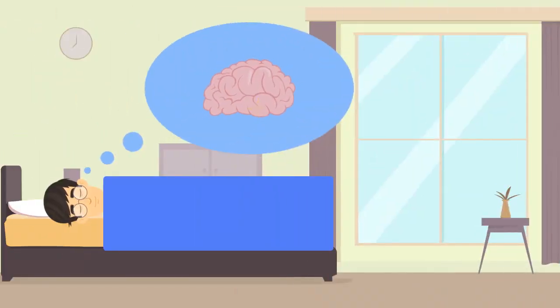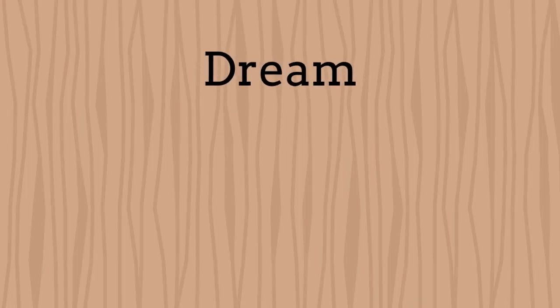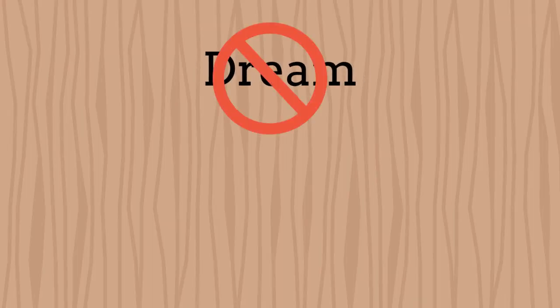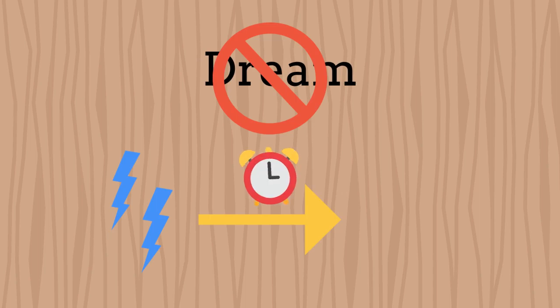These brain impulses, they suggested, are synthesized and analyzed to define meaning. This model suggests that we don't actually dream, but that once we awake, we pull all the random neural firings together to form a coherent narrative we can make sense of.